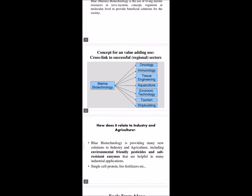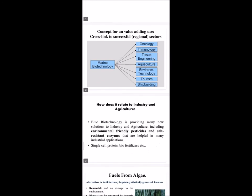The second sector is immunology, which is related to our present health. If we are susceptible to any disease, we take different types of medicine. In the formation of these medicines, we use marine resources. For example, cytarabine and ziconotide are used in pharmaceutical products.